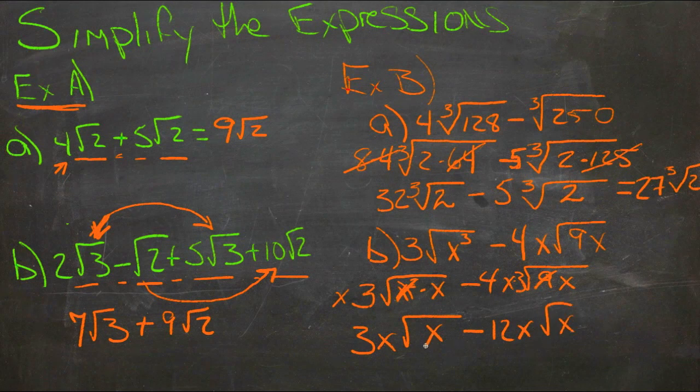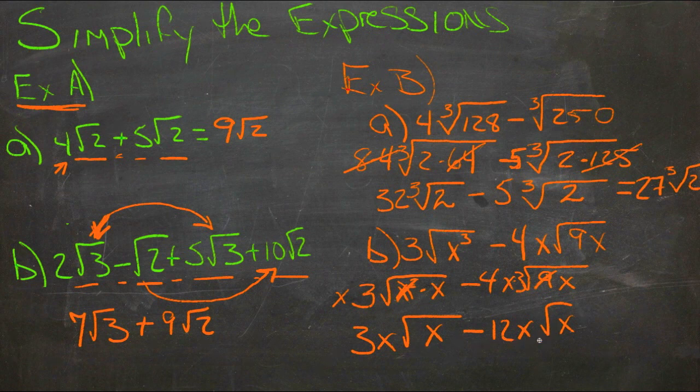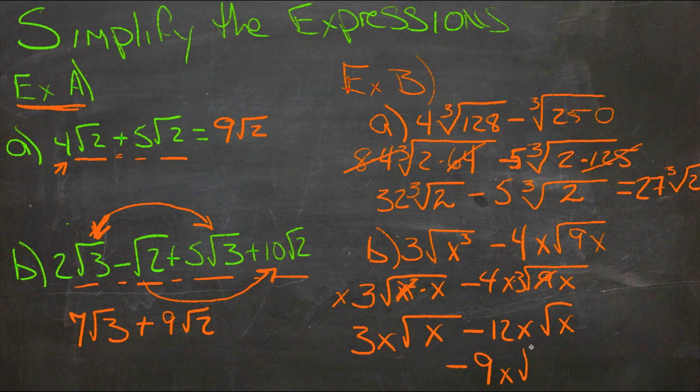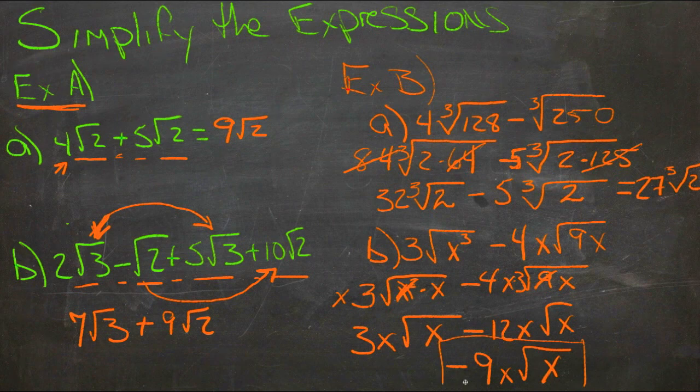So now we have 3x square roots of x, minus 12x square roots of x, that gives us negative 9x square roots of x. Again, just combining like terms when it comes down to the end.